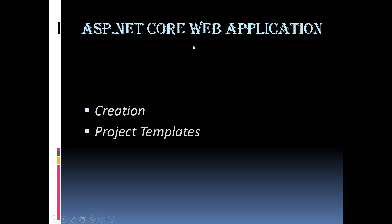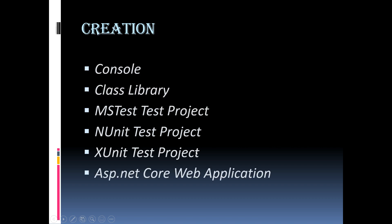Here let us discuss two things: creation of an ASP.NET Core web application step-by-step using Visual Studio 2017, and the different project templates available as part of .NET Core and what they do. Different kinds of projects under .NET Core — Console: if you want to create a standalone command line application, you can choose this console project.